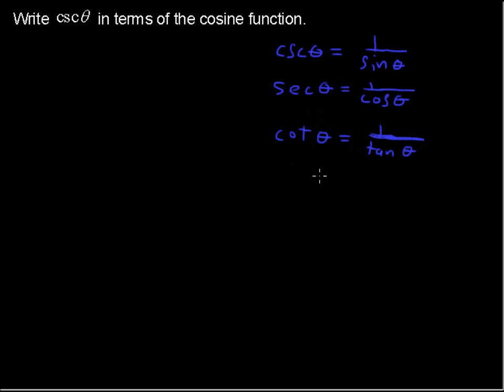Those are very common, and then a couple more that are used are sine squared theta plus cosine squared theta equals 1. That actually comes up a lot. And another one that comes up sometimes is tangent squared theta plus 1 equals secant squared theta.